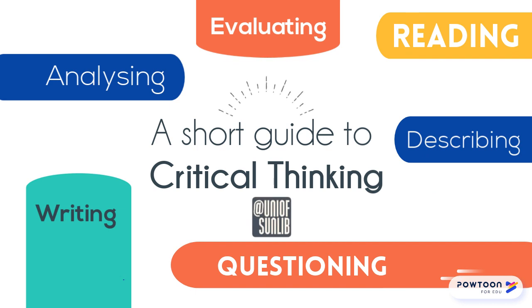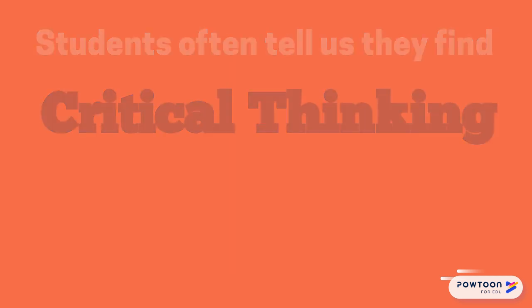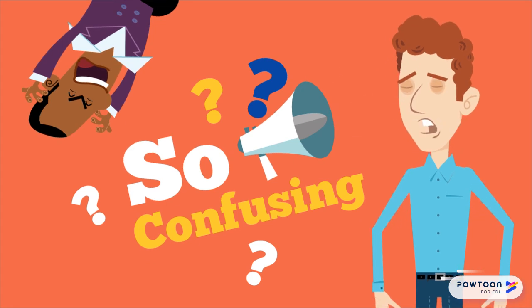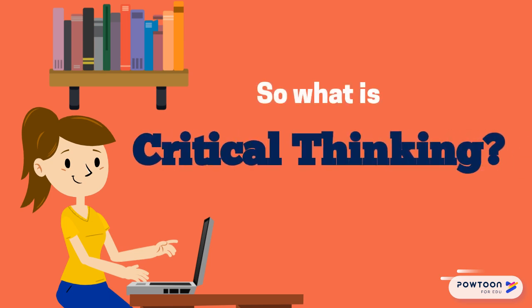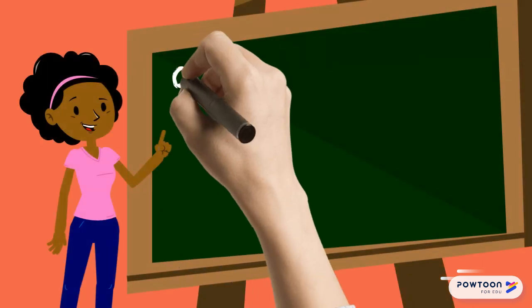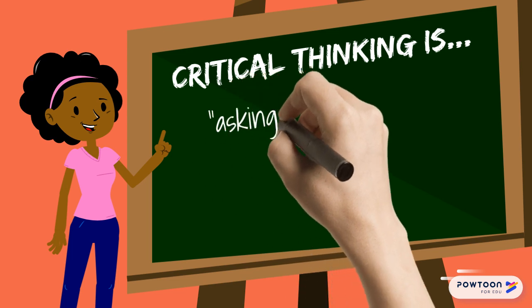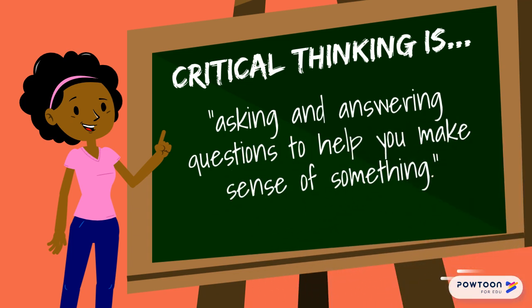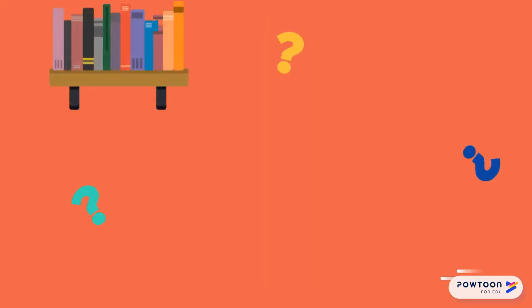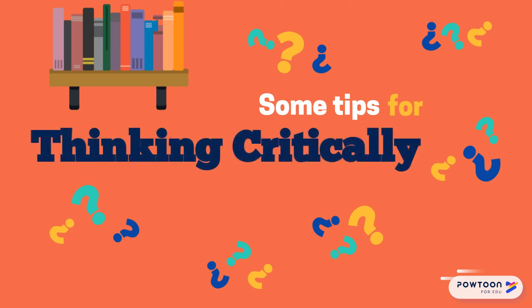A short guide to critical thinking. Students often tell us that they find critical thinking to be confusing. So what is critical thinking and how do you do it at university? We think of critical thinking as asking and answering questions to help you make sense of something. You probably do this every day without realising it, but at university it may mean asking questions about something you've read or an assignment topic you're planning and starting to write. We want to share some tips for thinking critically.